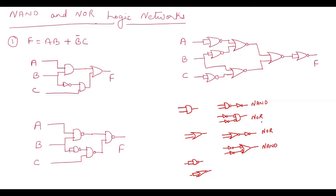One more important rule: if a line has a bubble and then we add an inverter, the two cancel each other. If we put two inverters, they neutralize each other. If there are an even number of inverters, we get the same value. If there is an odd number of inverters, we get the inverted value. Please remember this rule.